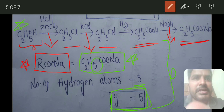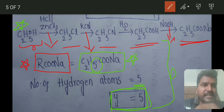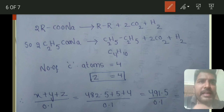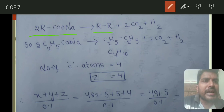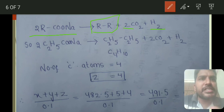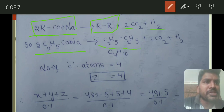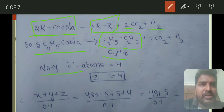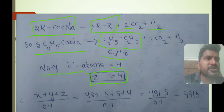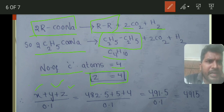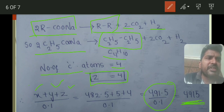For Z: according to Kolbe electrolysis, RCOO-Na gives R-R, 2CO₂, and hydrogen. The RCOO-Na used is C₂H₅COONa, so it produces butane. The number of carbon atoms in butane is 4, hence Z = 4. Substituting: X = 482.5, Y = 5, Z = 4. Adding all and dividing by 0.1 gives (482.5 + 5 + 4) / 0.1 = 4915.